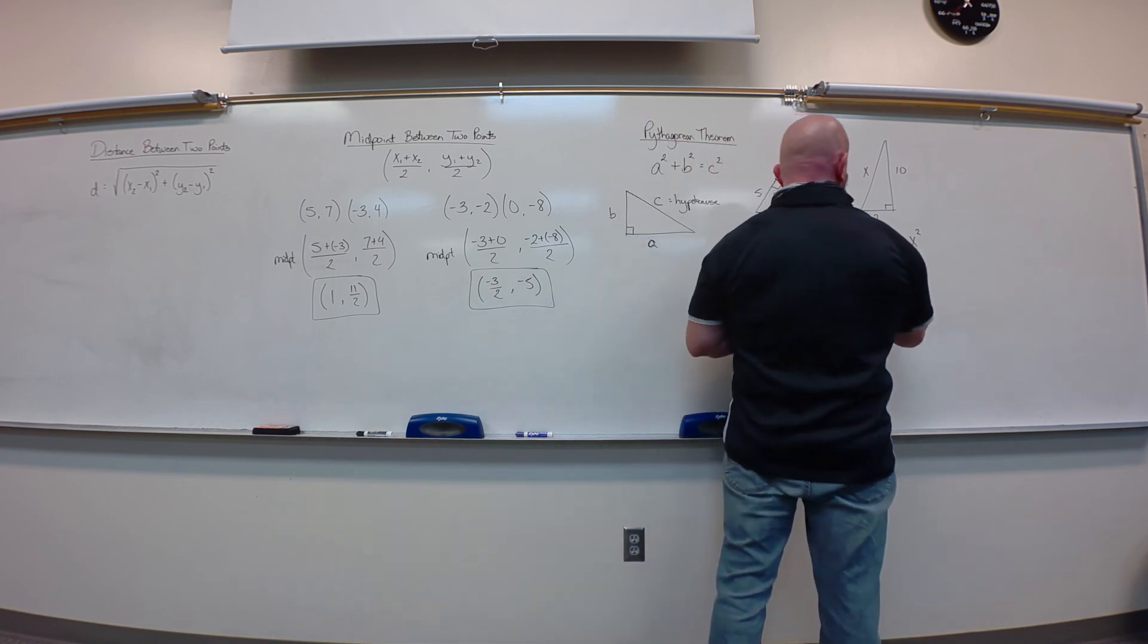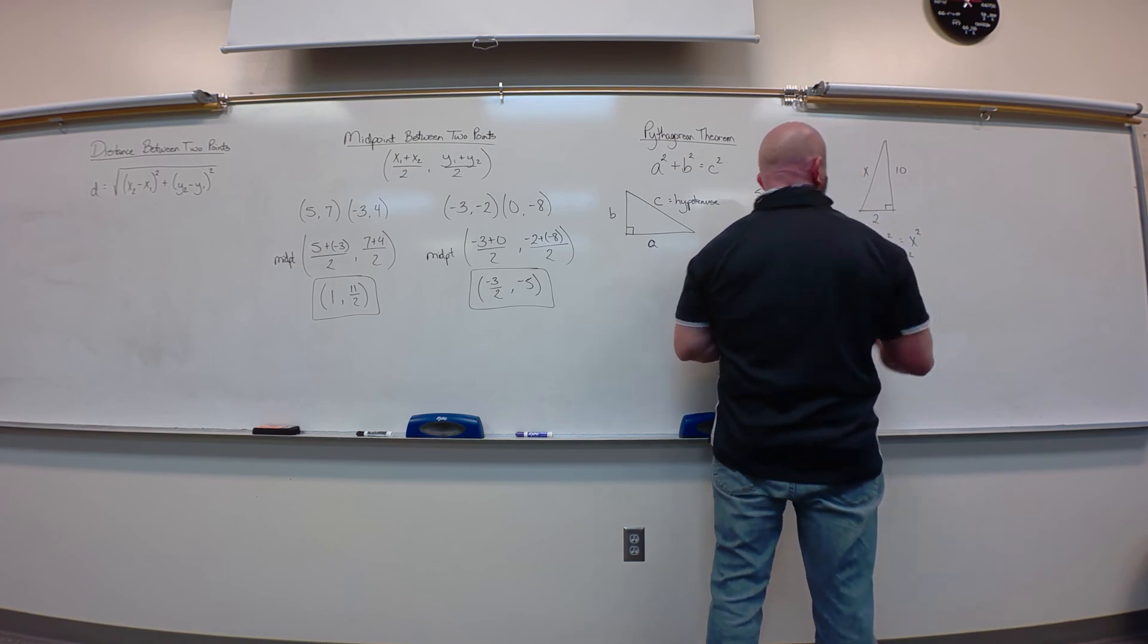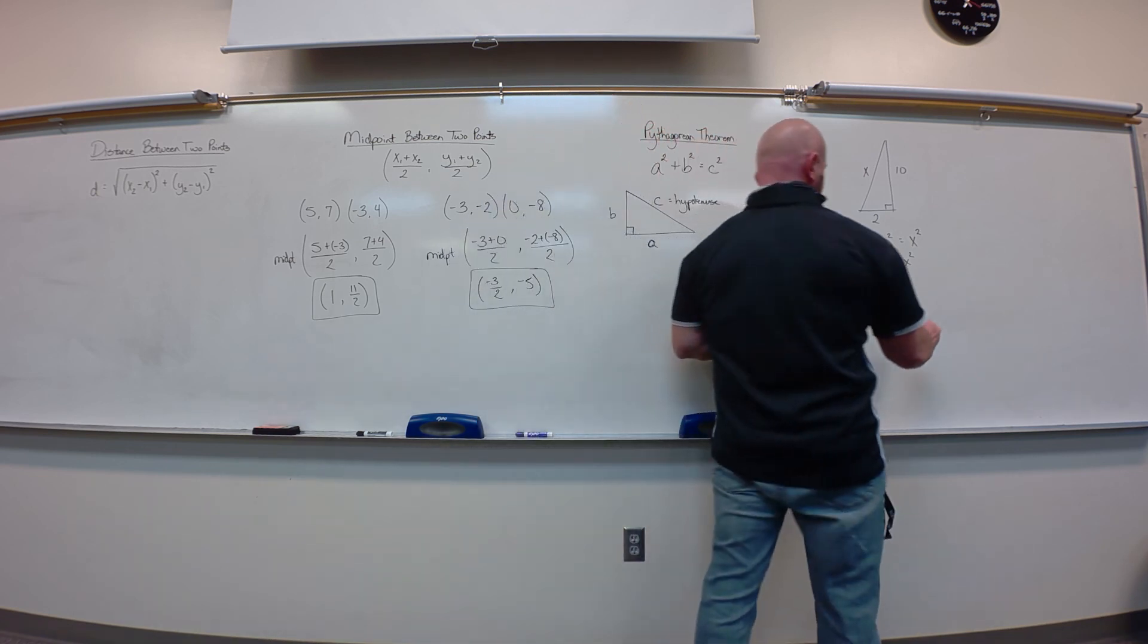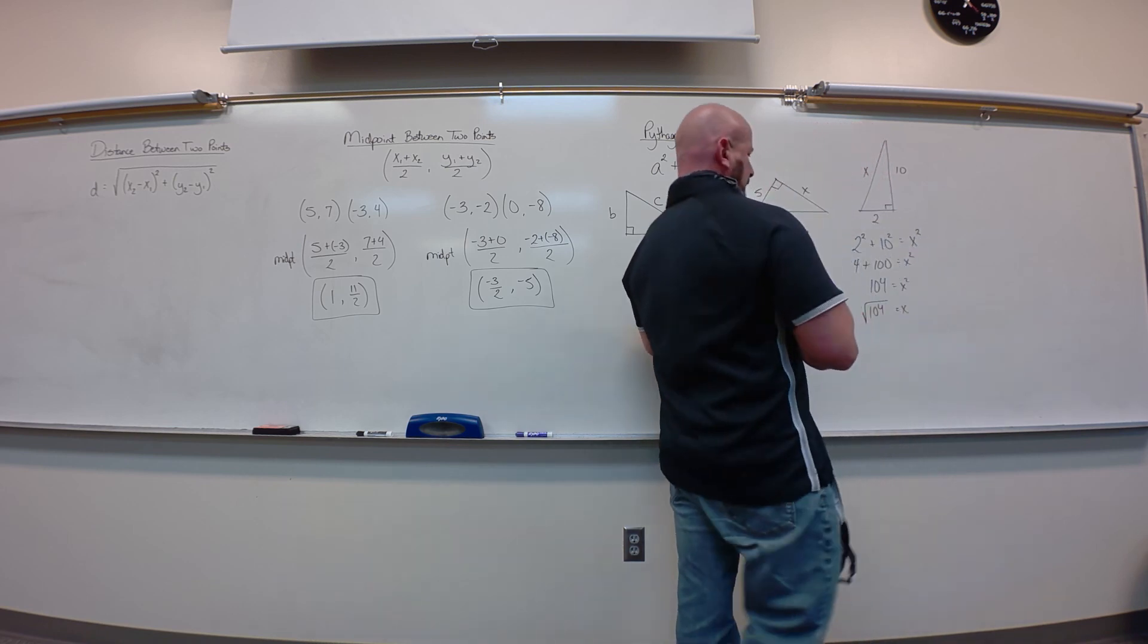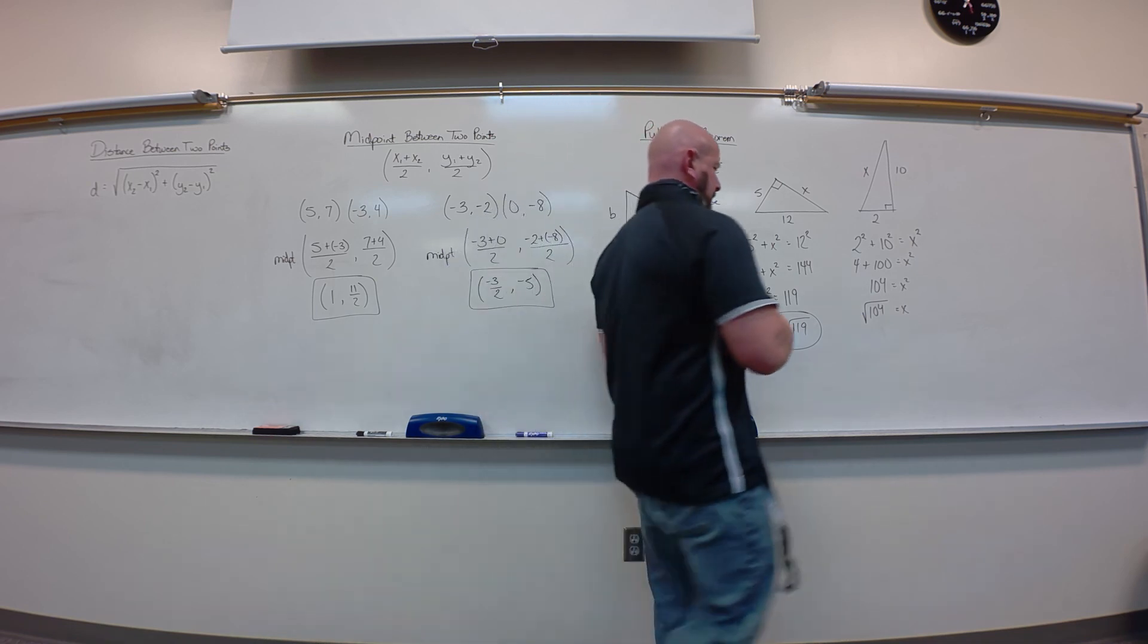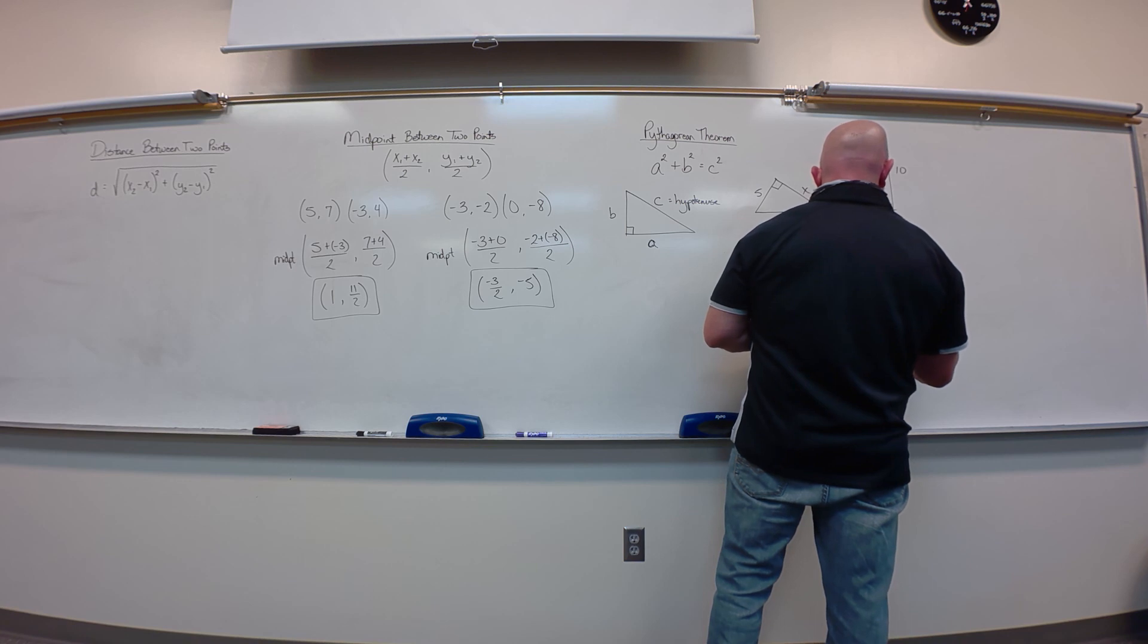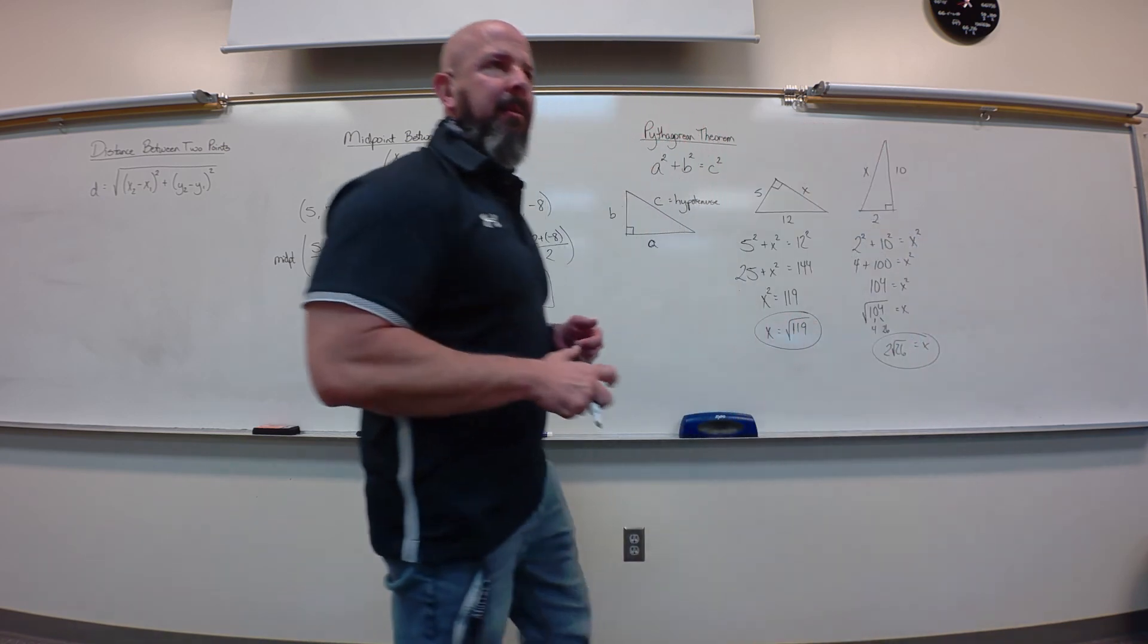So, that would be 4 plus 100. It's X squared. So, that's 104, and then I can square root that. So, X would be the square root of 104, and this one's one that does simplify. Does that be 4 and 26? 26, yeah. Yeah, so 2 root 26. There you go. So, again, if I can simplify, I'll simplify them. Not too bad there.